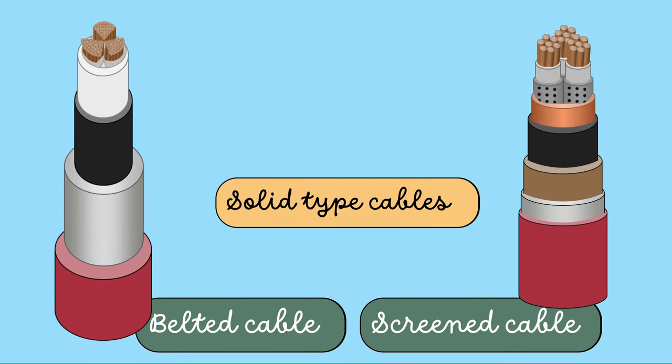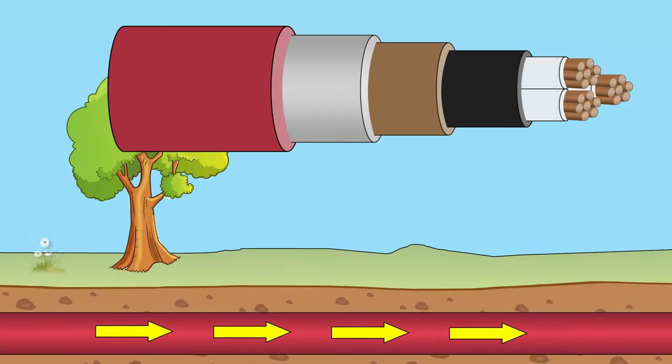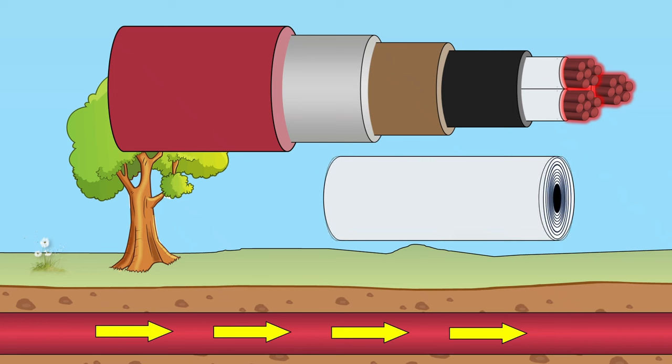These are called solid type cables because solid insulation is used. There is a problem with this solid insulation. When the cable carries the load, its conductor temperature increases. This leads to the expansion of paper insulation. This action stretches the lead sheet which may be damaged.